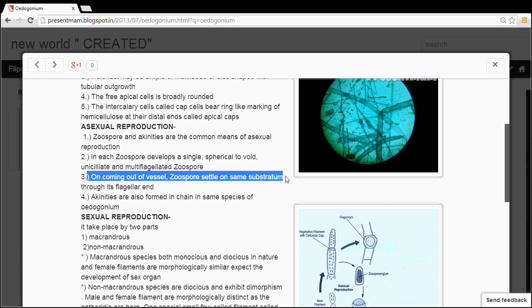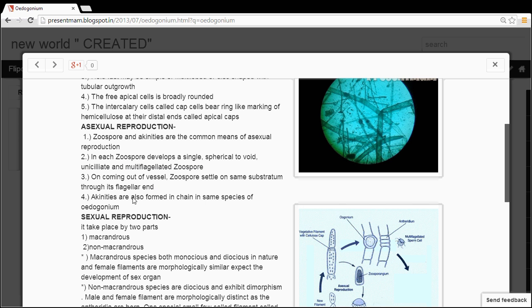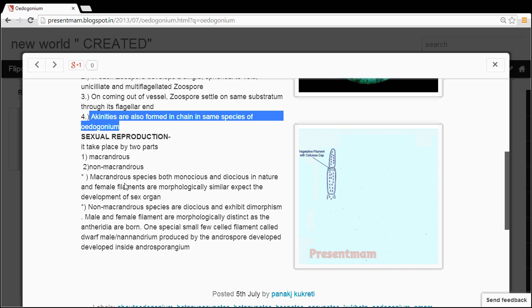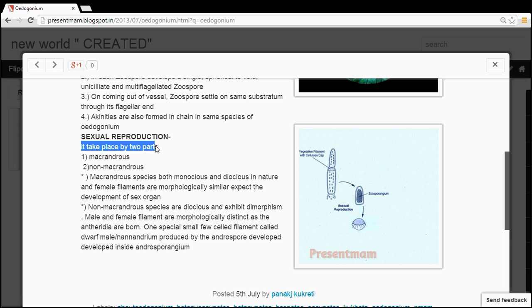Akinetes are also formed in chain in some species of Oedogonium. Now about their sexual reproduction, it takes place by two parts: the first one is macrandrous and the second one is nannandrous.